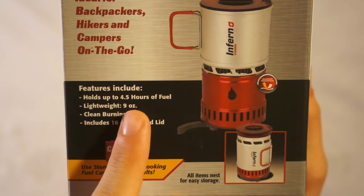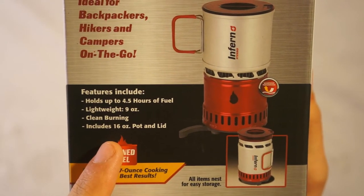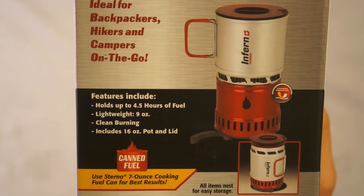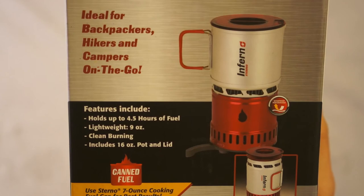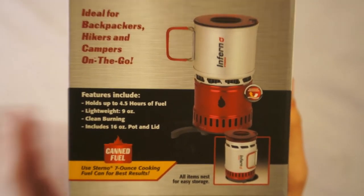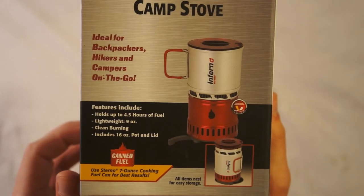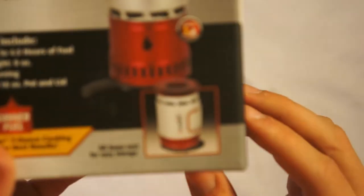It includes four and a half hours of fuel. It's lightweight, nine ounces. It burns clean. And it includes a 16 ounce pot and lid. So that's this right here. This and the lid.